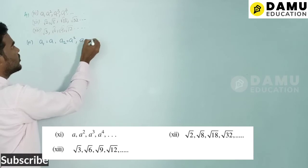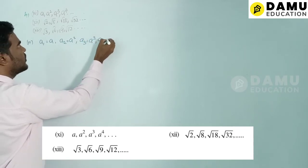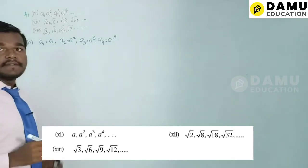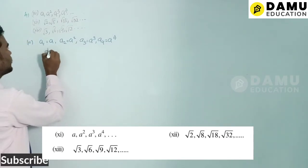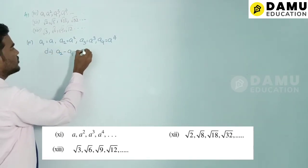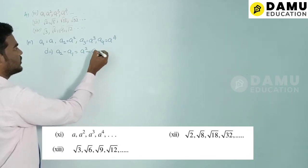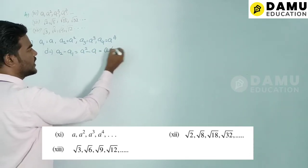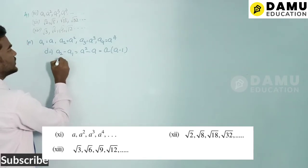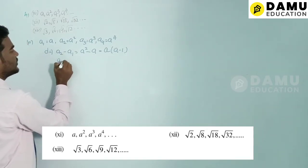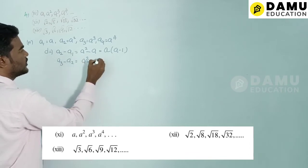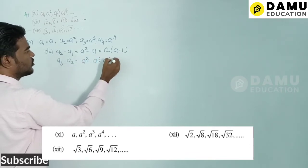The common difference d = a2 − a1 = a² − a = a(a − 1). Then a3 − a2 = a³ − a² = a²(a − 1).